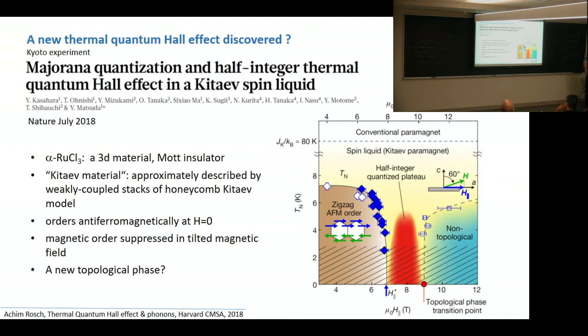The material is ruthenium chloride. It's a proper three-dimensional material, so not like a topological insulator as you're used to thinking about. It's a Mott insulator. It's believed to be approximately described by weakly coupled layers of Kitaev-Heisenberg models. But actually, if you look at it, it's just almost magnetically ordered at zero magnetic fields. But now, what this paper's about is what happens when you apply magnetic field to suppress the magnetic order.